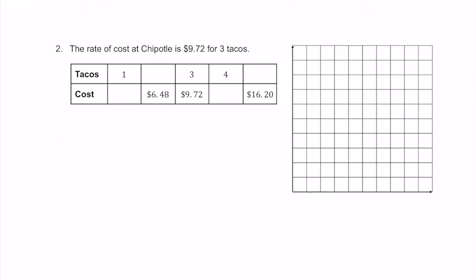Here's number 2. For number 2, we see the rate of cost at Chipotle is $9.72 for 3 tacos. Tacos are going to be our independent variable, represented by x on the x-axis. The cost of the tacos — $9.72 — represents the dependent variable, graphed along the y-axis. So we have this original rate of 3 tacos for $9.72.